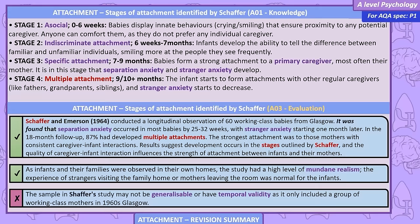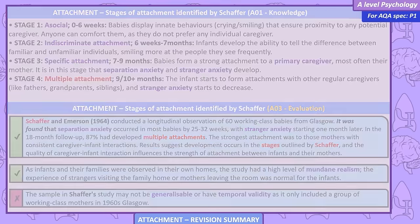In the 18-month follow-up, 87% had developed multiple attachments. The strongest attachment was to those mothers with consistent caregiver-infant interactions. Results suggest development occurs in the stages outlined by Schaffer, and the quality of caregiver-infant interaction influences attachment strength. As infants and families were observed in their own homes, the study has high mundane realism. However, the sample may not be generalisable or have temporal validity, as it only included working class mothers in 1960s Glasgow.